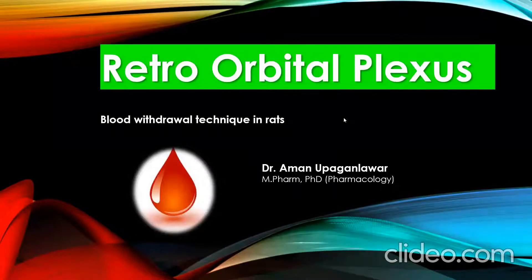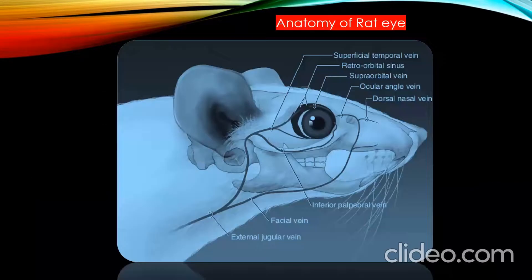Hello friends. Today we are going to discuss about retro-orbital plexus. It is one of the methods for blood collection in the rat as well as mice. Let's see the introduction.